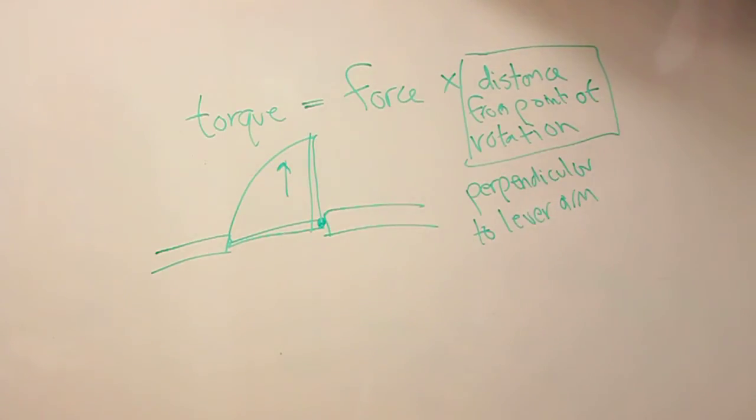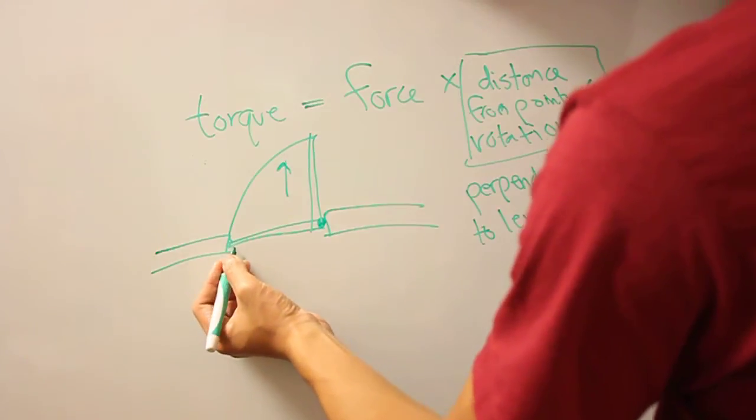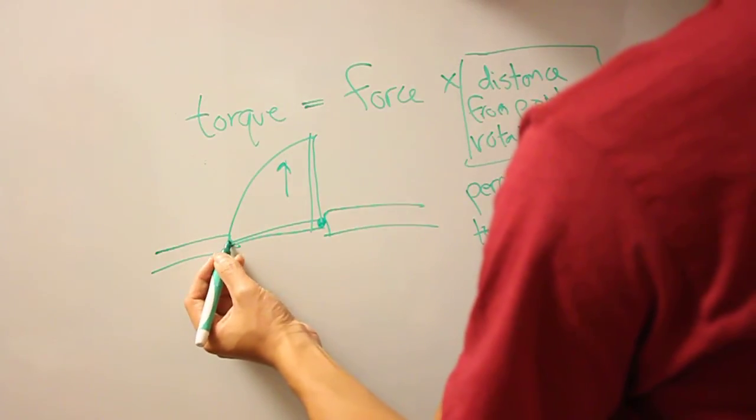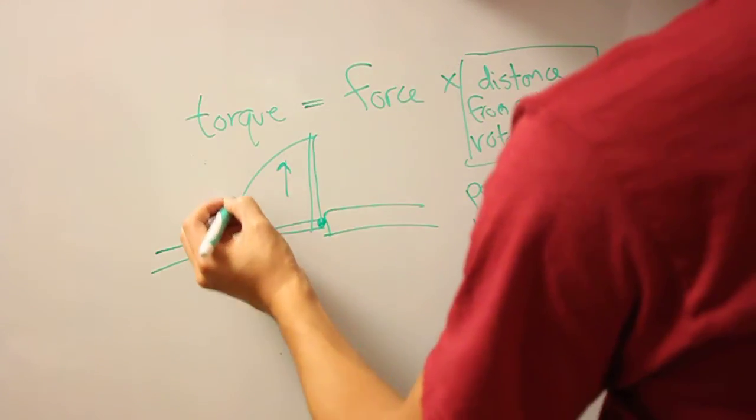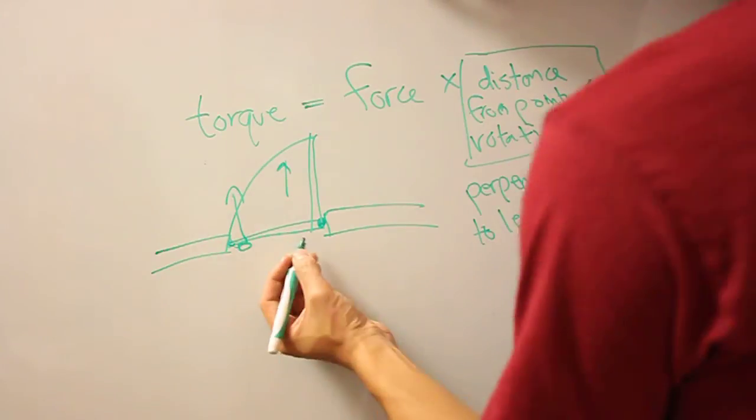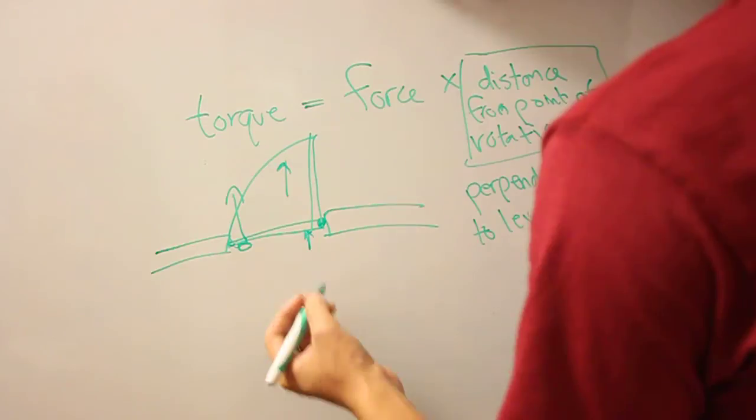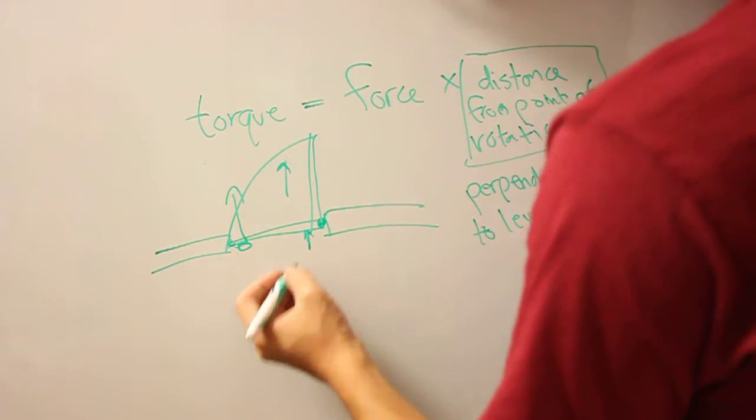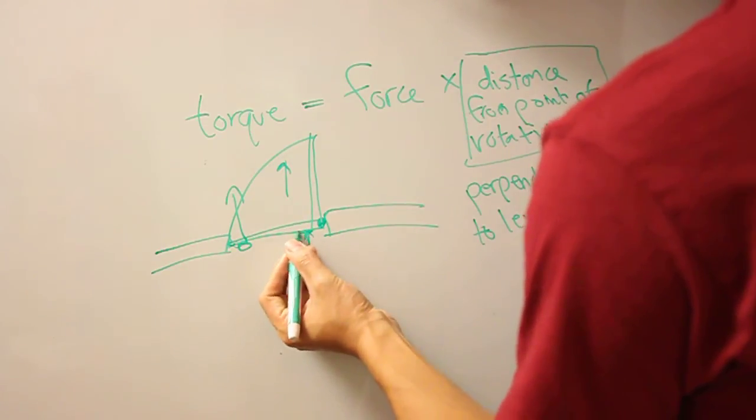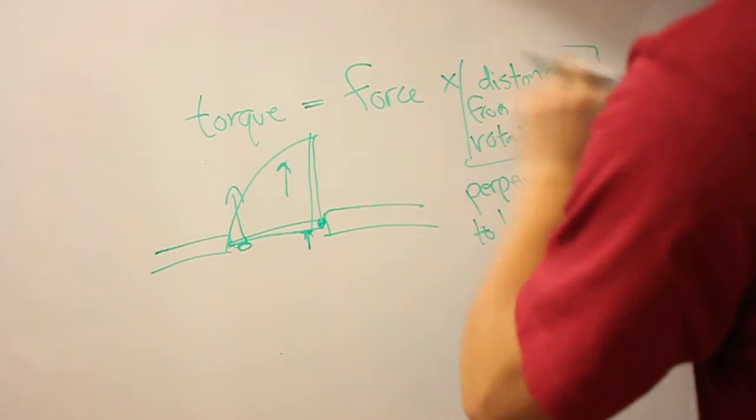Now, just from your natural experience, the easiest way to open the door is to push as far as you can to this side where the handle is, straight up. Now it's really hard, and I'm sure you've tried, to try to open the door by pushing here. Say you have your back to the door and you're trying to get in with a big package. It's really hard to open it here. So, how is this working in terms of this equation?